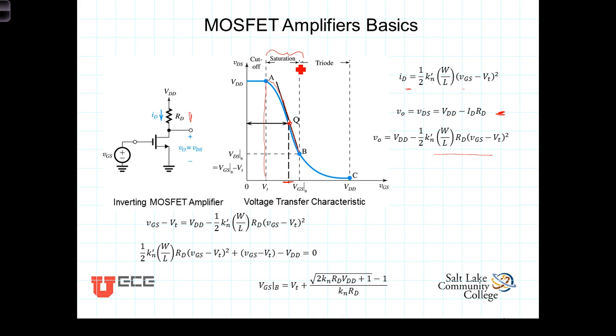By setting our expression here equal to VGS minus VT, the value of VDS, where when VDS equals VGS minus VT, we're at the border of the transition, or the border between the saturation and triode regions.